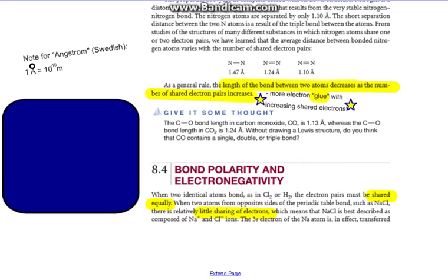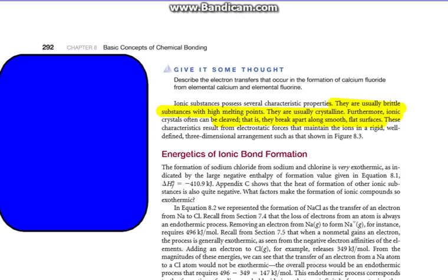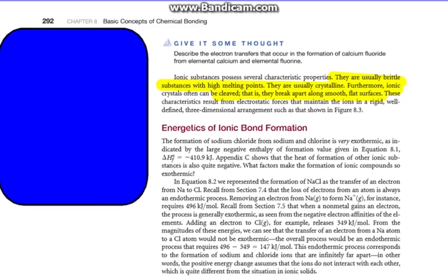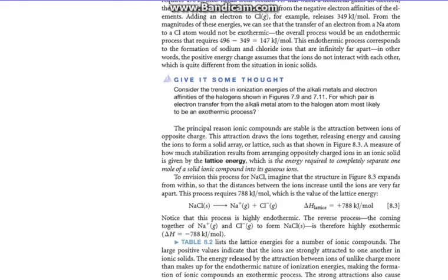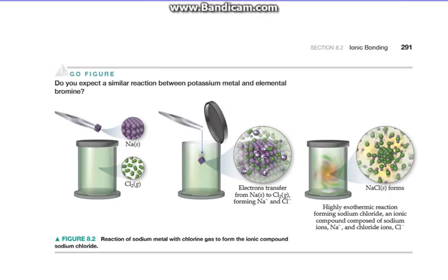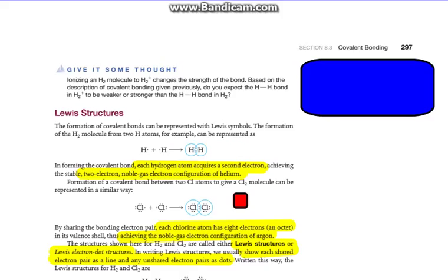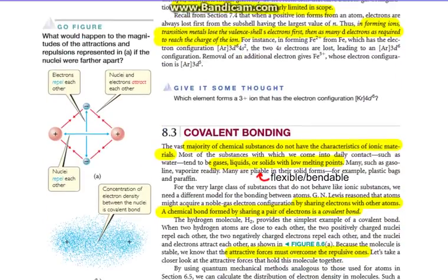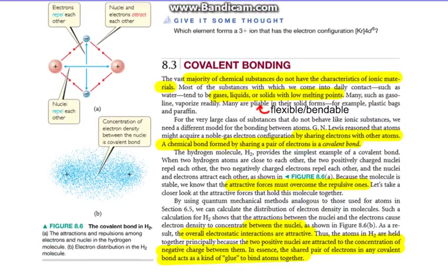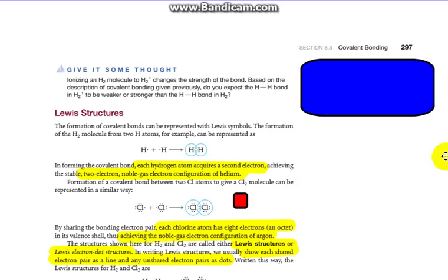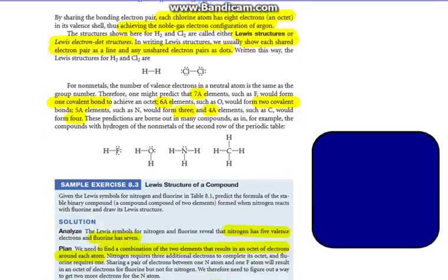Last time we looked at covalent bonding and how that works with electron sharing. We looked at how separate atoms form an octet due to that sharing.